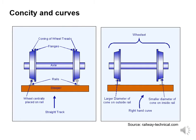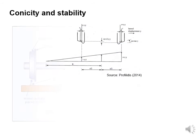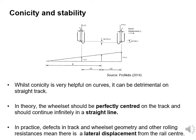The two images show, on the left, the wheel set travelling along straight track where the wheel is centrally placed on the rail. The right-hand figure shows a right-hand curve — on the left-hand side wheel, the larger diameter of the cone is on the outside rail, and on the right-hand wheel, the smaller diameter of the cone is on the inside rail. While conicity is very helpful on curves, it can be detrimental on straight track. In theory, the wheel set should be perfectly centred on the track. In practice, defects in the track and wheel set geometry mean there is a lateral displacement from the rail centre. The wheels are often not perfectly round — for example, in some cases you might have a flat spot on the tyre.